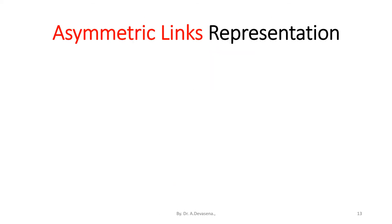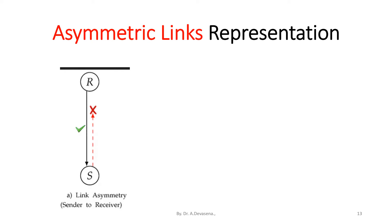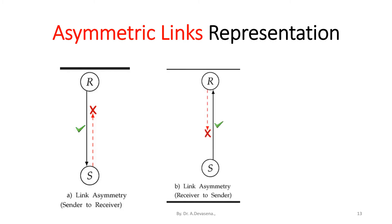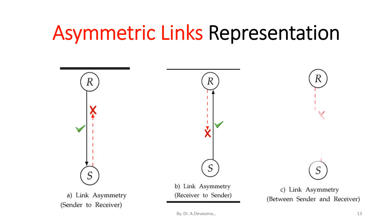Asymmetric links representation: in the first scenario, link asymmetry between sender and receiver takes place, indicated by a dotted link, but information from receiver to sender takes place in a proper manner, indicated as a good link. In the second scenario, link asymmetry takes place between receiver and sender, indicated by a dotted line, but the sender sends information to the receiver via a good link. In the third scenario, there is no proper link between the sender node and receiver node.